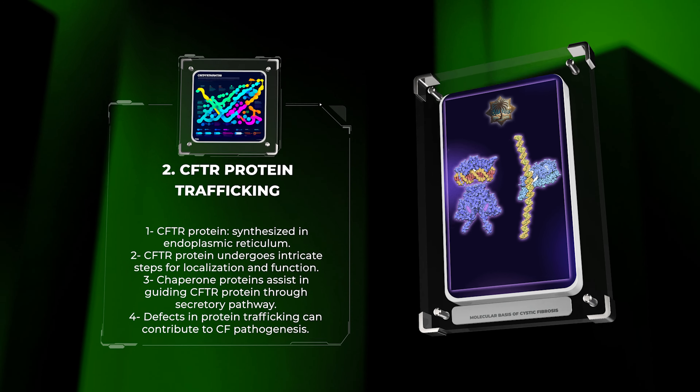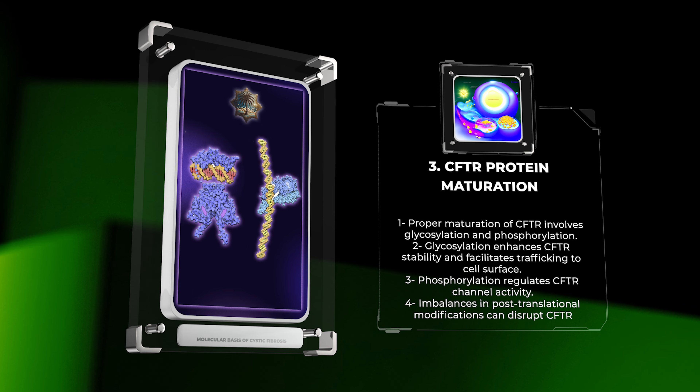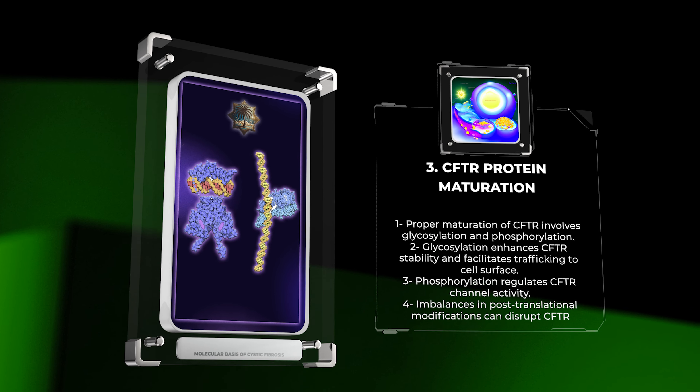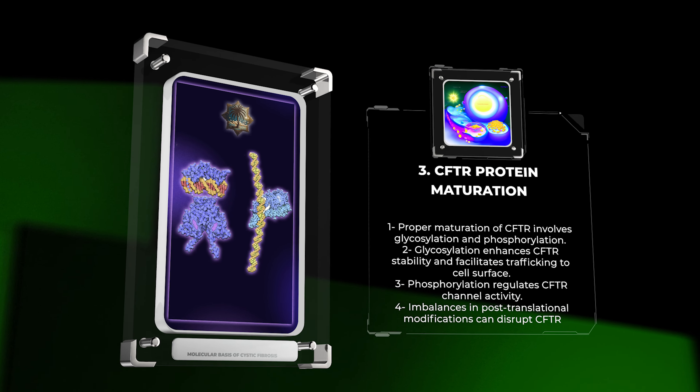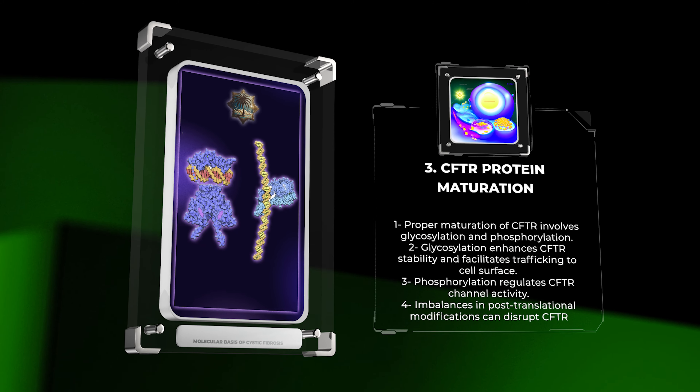Proper maturation of CFTR involves several post-translational modifications, including glycosylation and phosphorylation. Glycosylation enhances CFTR stability and facilitates its trafficking to the cell surface. Meanwhile, phosphorylation by kinases regulates CFTR channel activity. Imbalances in these processes can disrupt CFTR protein maturation, leading to CF-associated abnormalities.